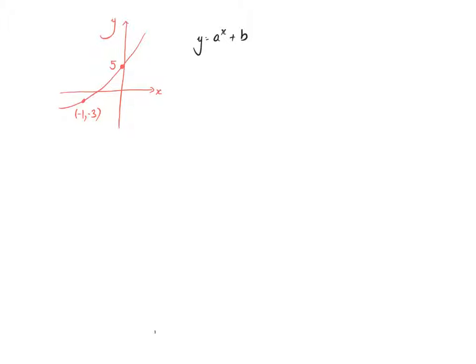So we know that initially we should have had (0,1) and (1,a), but what we've actually got is (-1,-3) and (0,5).